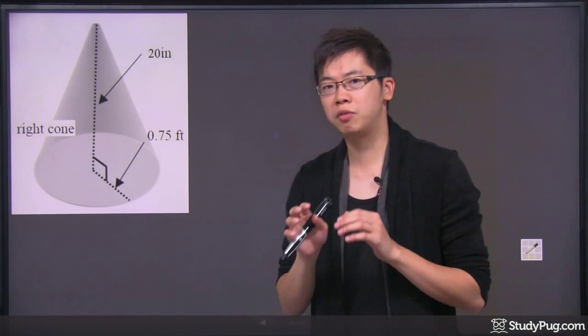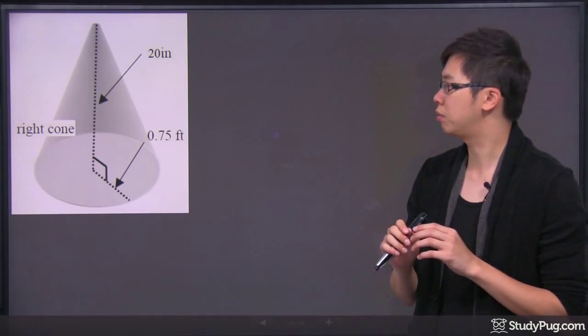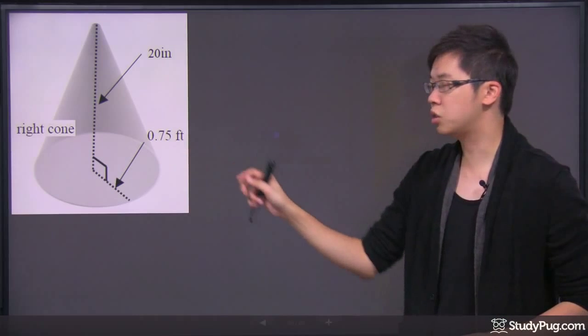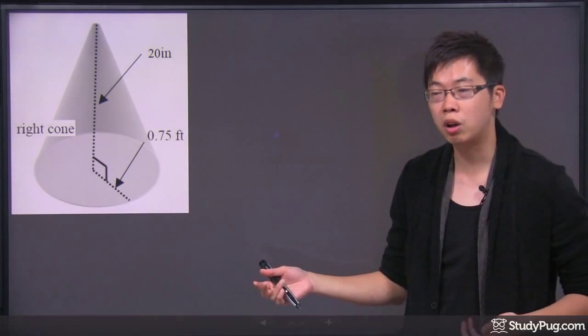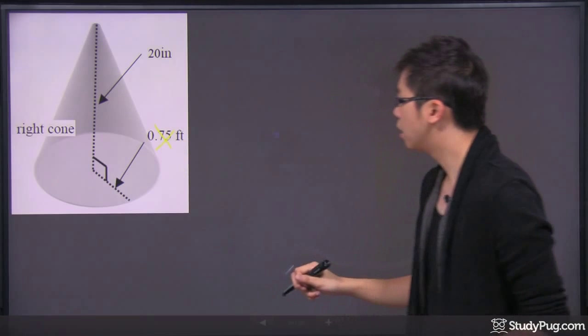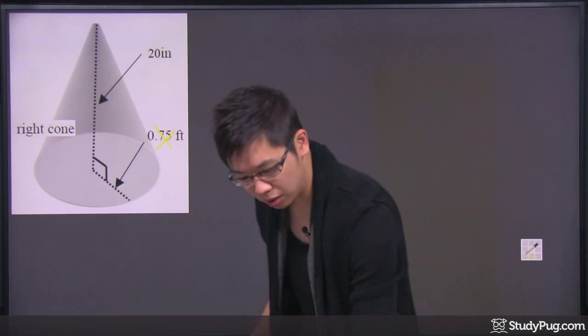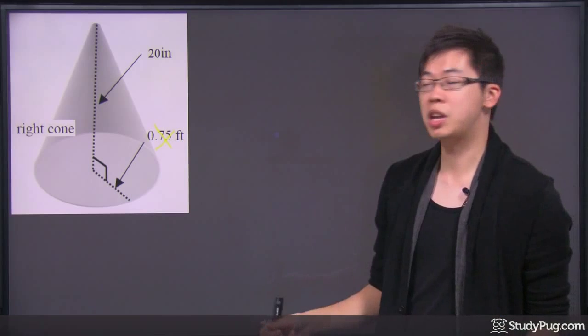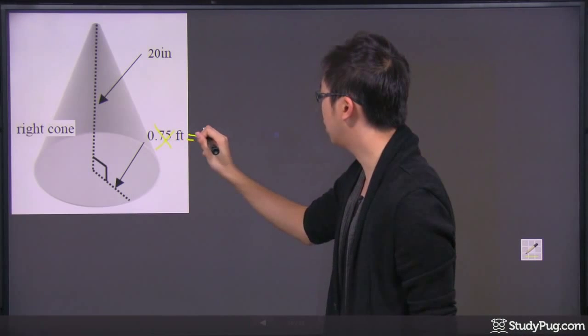If you remember, for every foot, there's 12 inches. We're just going to take the 0.75 times by 12 to get the inches. We're going to cross this one out right here. The inch would be, I believe I've had it written down here, it would be just 9 inch. This part right here is just 9 inch.